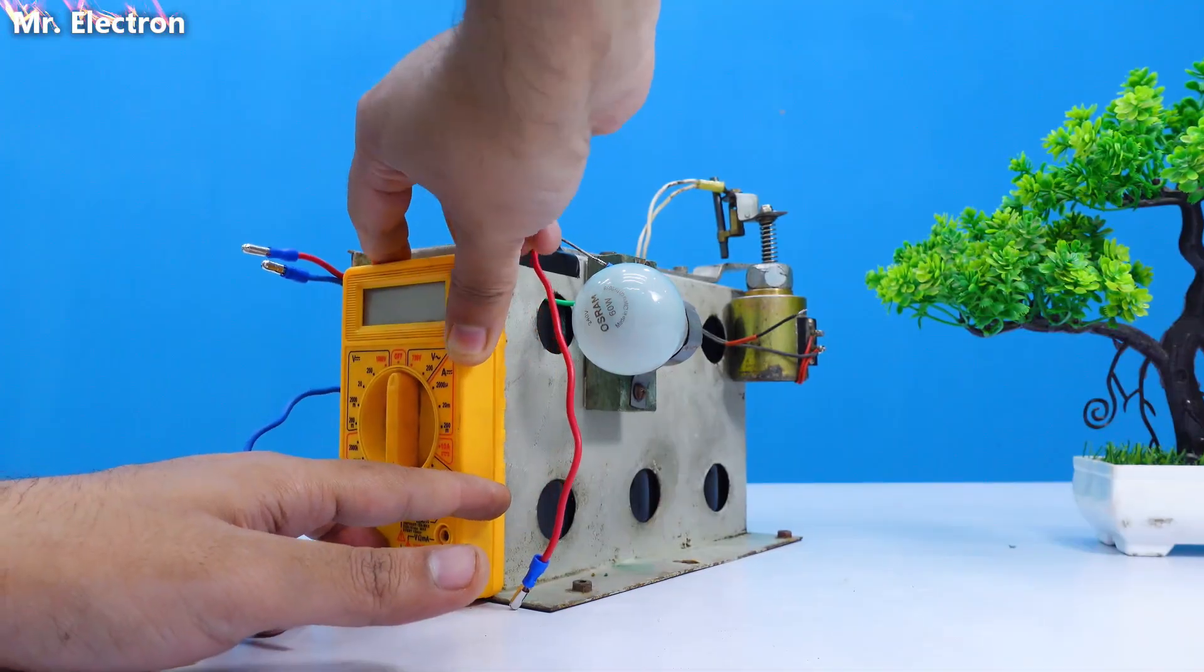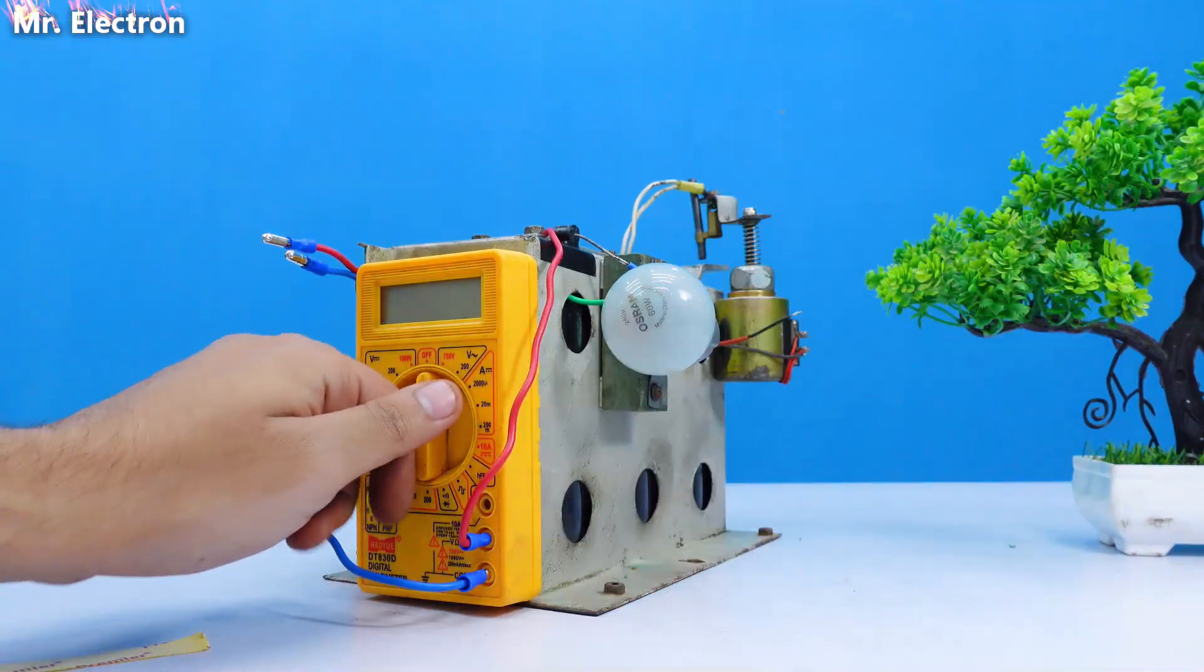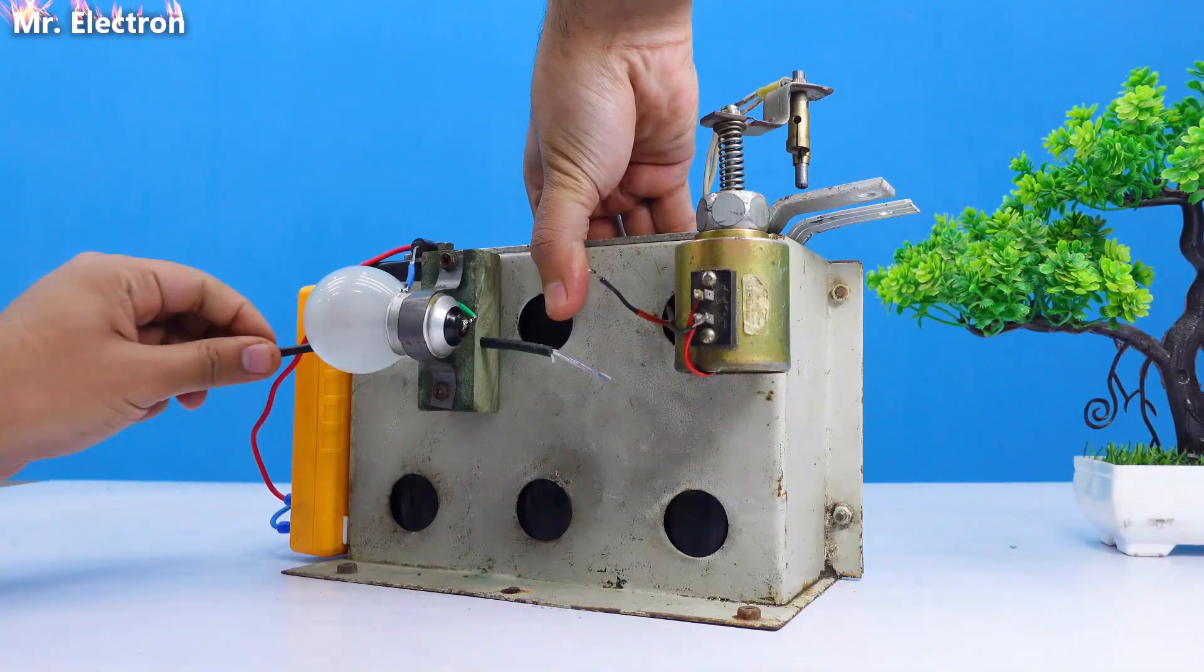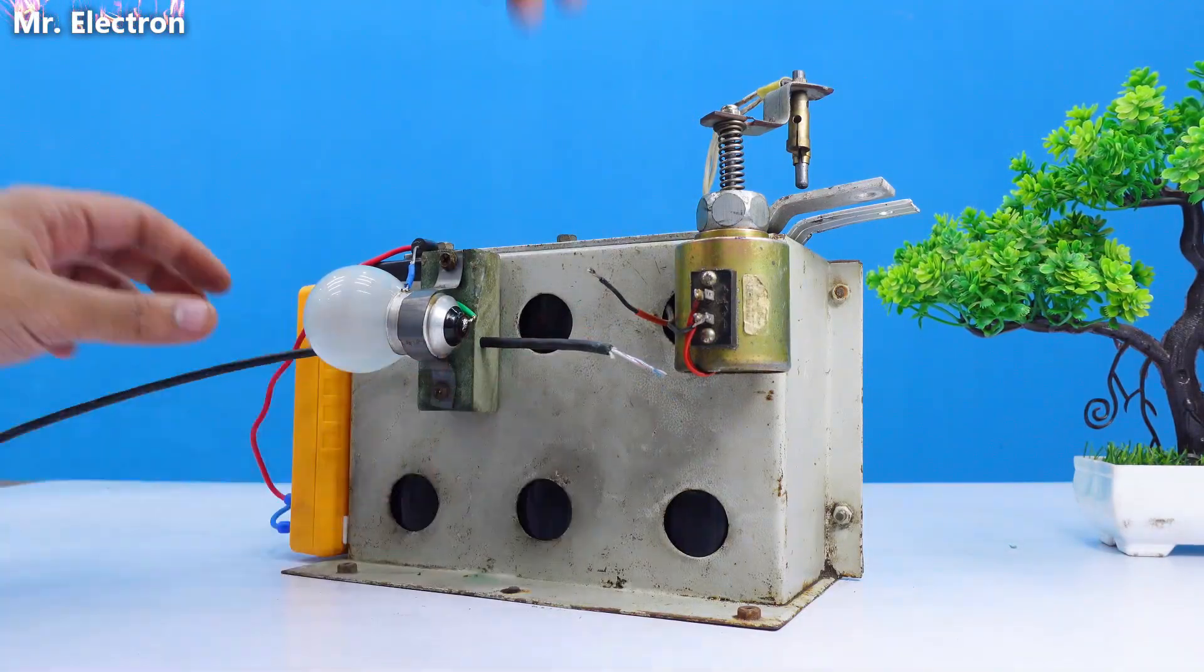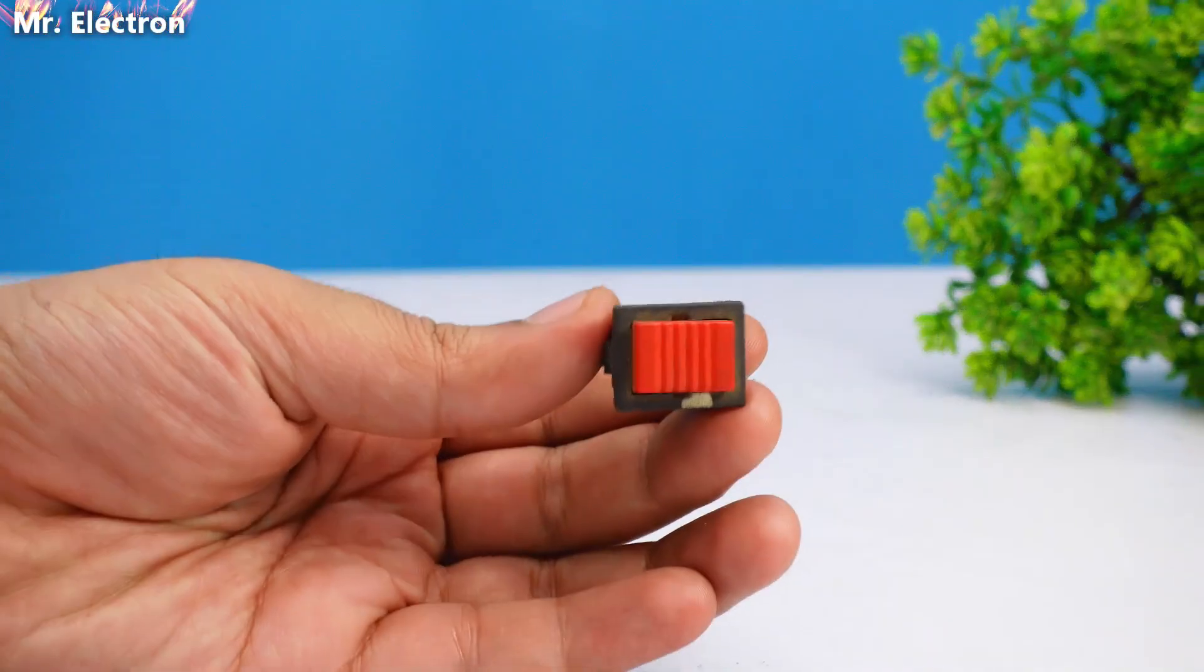After that this is the negative for the capacitor voltage reading and this is the positive. Next comes this a few meters long old and discarded broadband cable. This one is not fiber it is copper one.